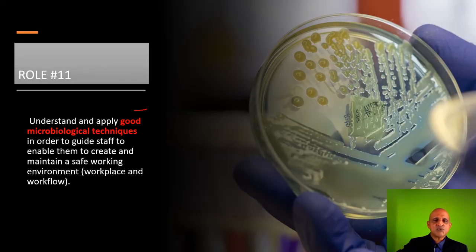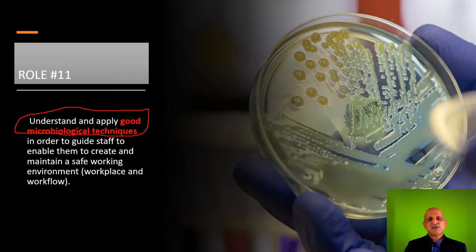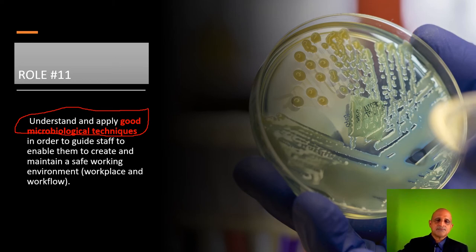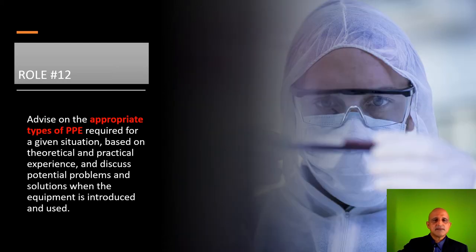The eleventh role is to understand and apply good microbiological techniques. Most of those trained as microbiologists are aware of these, and as a biosafety officer you must be aware of good microbiological techniques including aseptic working conditions as well as sterilisation and decontamination. The twelfth role is to advise on appropriate types of PPE, as covered in the lecture on PPEs. The choice of PPE is of course based on risk assessment.